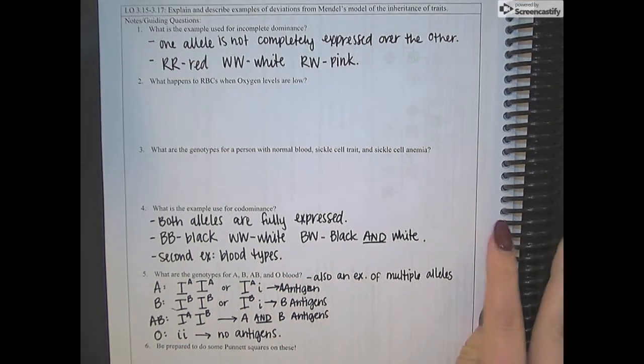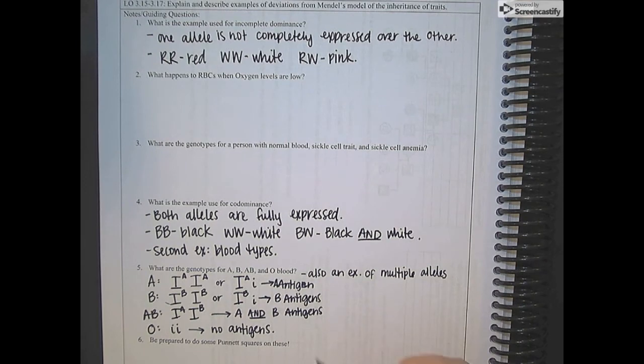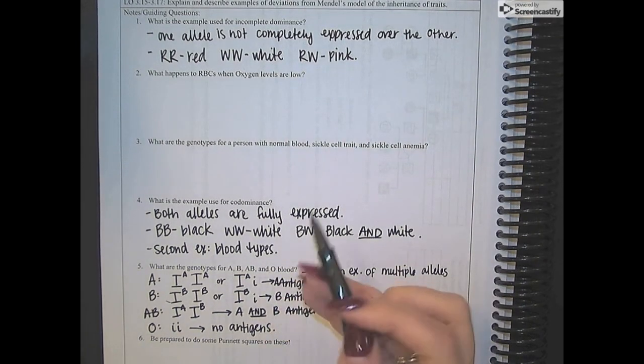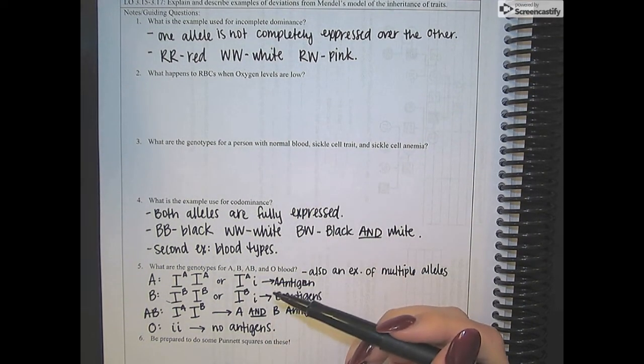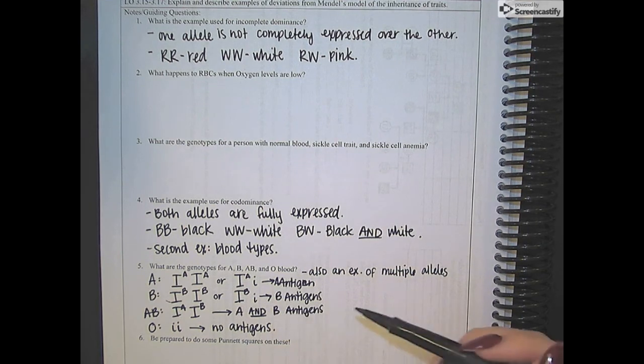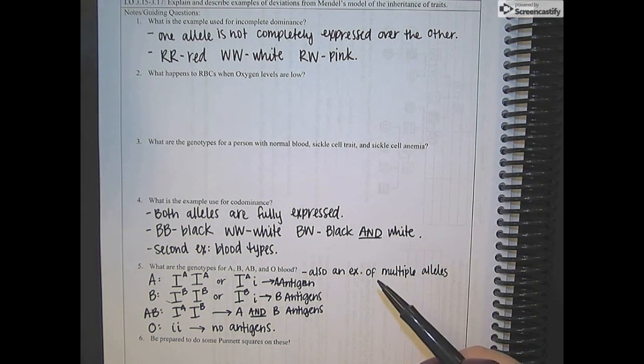All right, so that pretty much sums it up. Make sure that you're able to do Punnett squares with these different types of inheritance patterns in order to predict offspring.